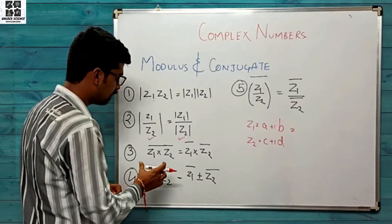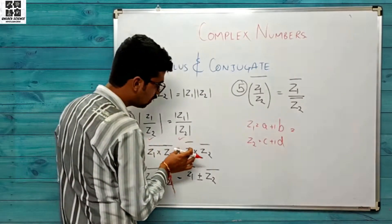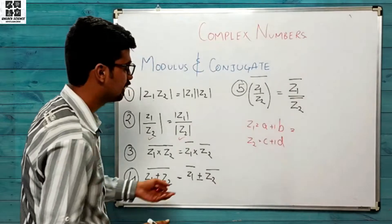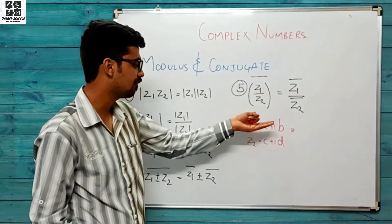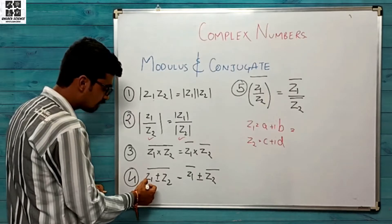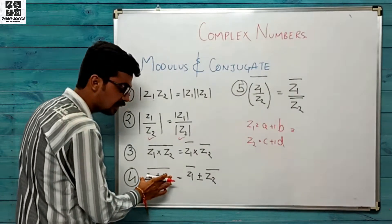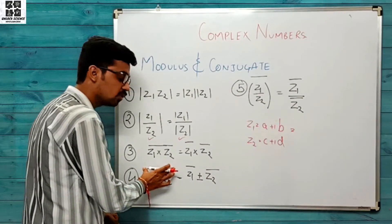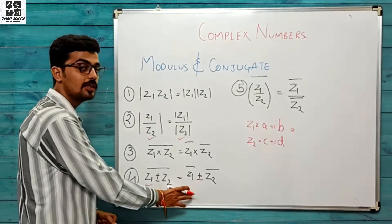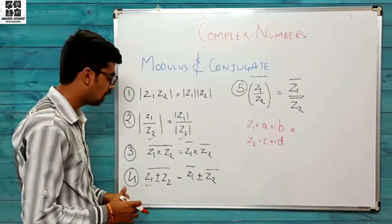Ab conjugate properties par aate hain. Conjugate mein agar aapne pehle complex numbers ko multiply kar liya aur then you are taking the whole conjugate, that will be equal to the product of the individual conjugates of both complex numbers. Similarly, agar aap add kar rahe hain in dono ko — z1 + z2 ka conjugate nikaalein ya individually z1 aur z2 ke conjugates nikaal ke add karo — then both outputs will be same.